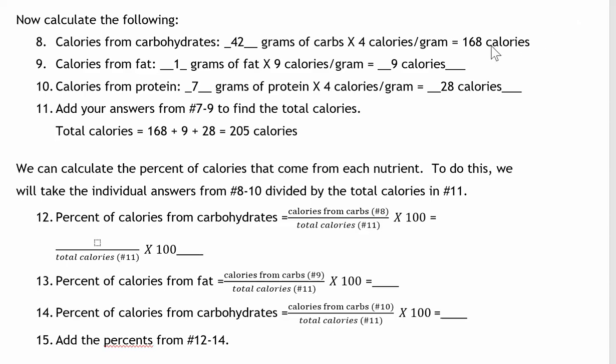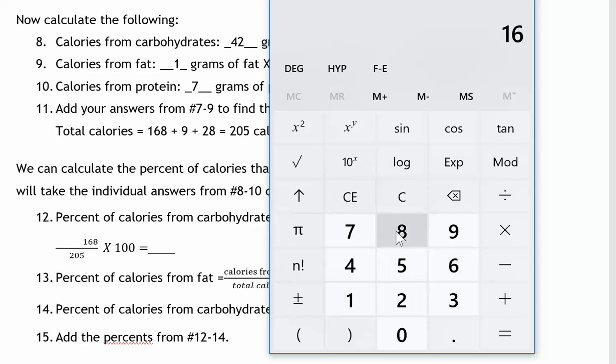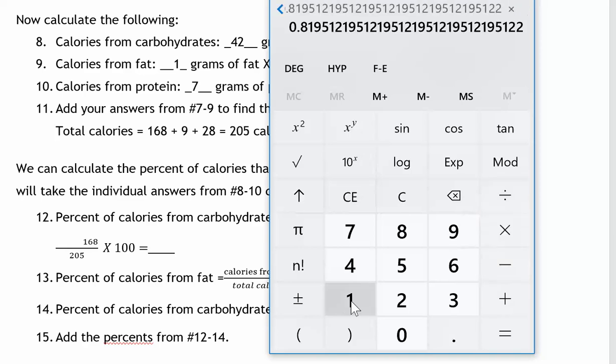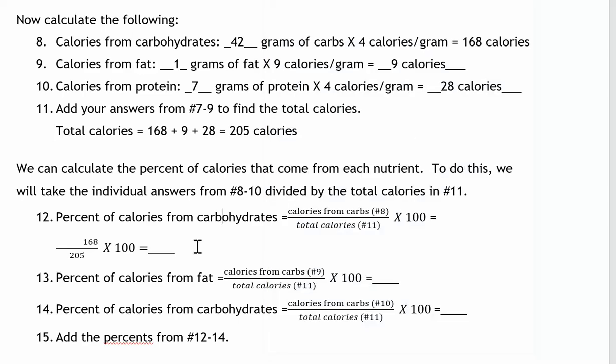So on the top of my fraction, I need 168, which is the calories from carbs. On the bottom, I want the total calories. Number 11 said the total calories was 205. So for this part, I will need my calculator. 168 divided by 205 equals 0.8195. To change this to a percent, we move the decimal two places to the right or multiply it by 100. I want to round to the nearest whole number. The nine tells me to bump up, so that's 82 percent. 82 percent of our calories come from carbohydrates.